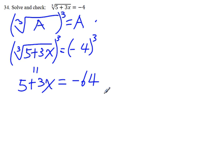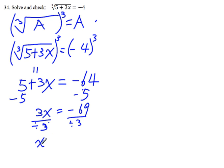So we have a linear equation in the variable x. We solve the equation by isolating x. First we remove 5 from the left side. So we get 3x on the left and negative 69 on the right. And then we divide both sides by 3.